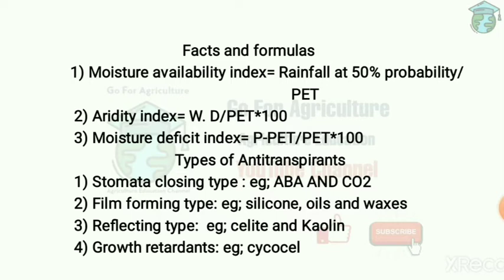Now we will discuss the factor formulas in this chapter. First, the Moisture Availability Index equals rainfall at 50 percent probability divided by potential evapotranspiration. Next, the Moisture Deficit Index equals precipitation minus potential evapotranspiration. These are the important formulas to know.